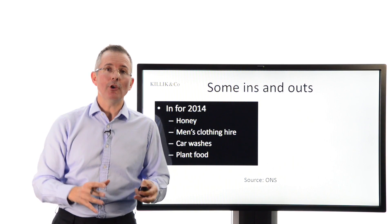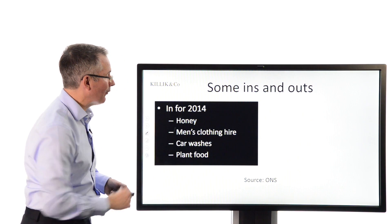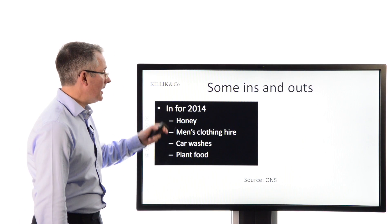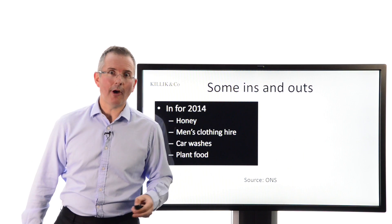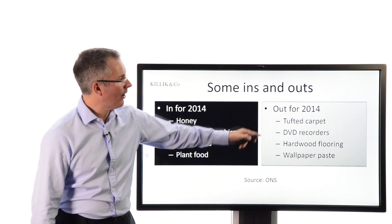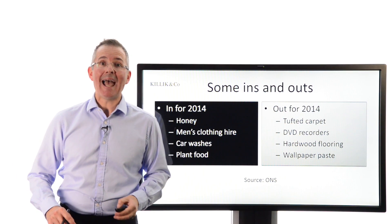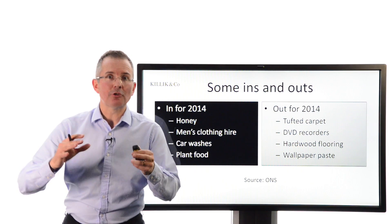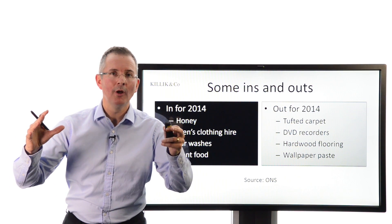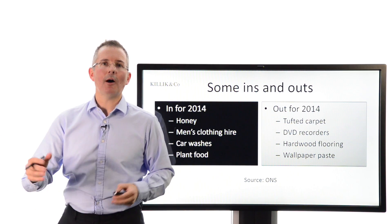What a UK family consumes will vary and change over time. For example, in 2014 certain things came into the basket and certain things dropped out. Items coming in included honey, men's clothing hire, certain types of carwash, and plant food. Items going out included tufted carpets, DVD recorders, hardwood flooring — which took a battering in the last recession — and wallpaper paste. The point is they're trying to make the basket as representative as possible of what people are buying and consuming.